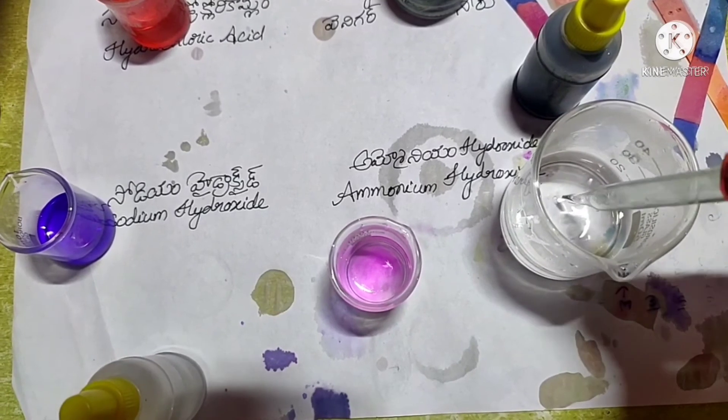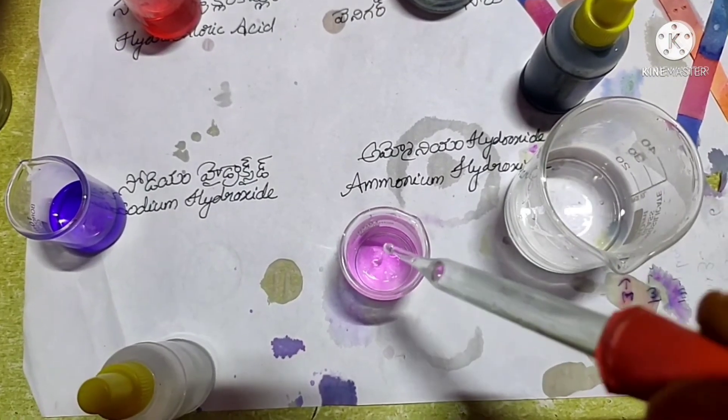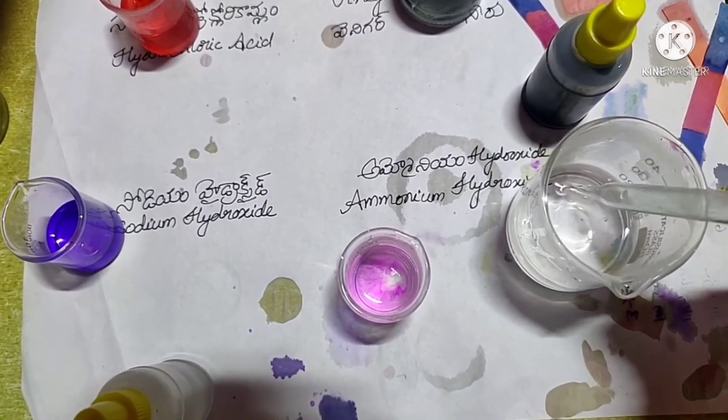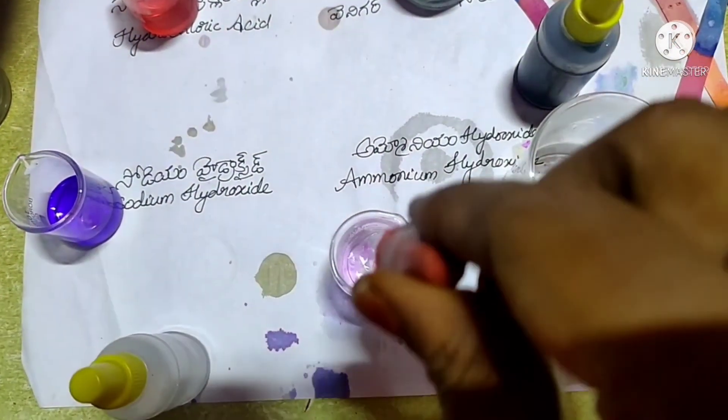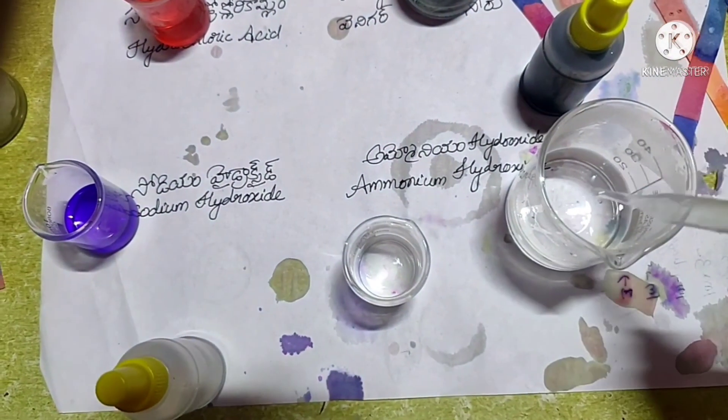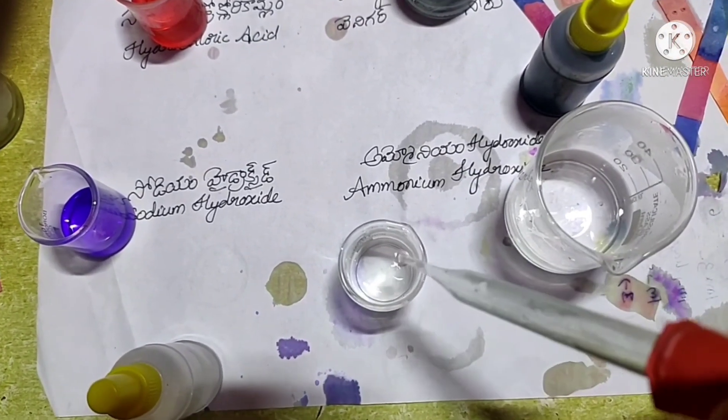Now add one more drop of hydrochloric acid to the solution. The pink color disappears - it has again become acidic. We can conclude that acids react with bases to produce salt and water.